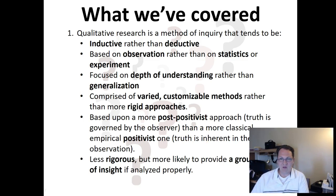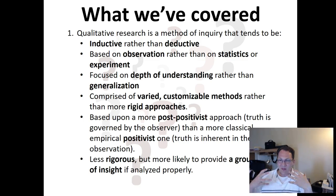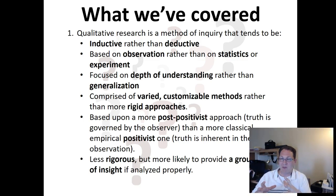Qualitative research is based on a more post-positivist approach — the idea that truth is governed by the observer — rather than the classical empirical positivist view that truth is inherent in the observation. What we're doing in qualitative research has a basis in science, and if used properly it helps apply the scientific method properly. Our perspective is that the person being interviewed or doing the observation has an influence on the truth we're going to glean, adding nuance.